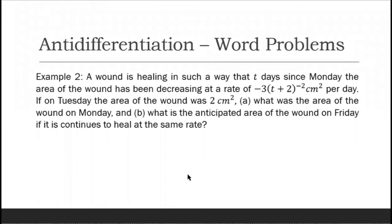Example number two: a wound is healing such that t days since Monday, the area of the wound has been decreasing at a rate of -3(t + 2)⁻² square centimeters per day. On Tuesday the area of the wound was 2 square centimeters. Question a: what was the area of the wound on Monday? Question b: what is the anticipated area of the wound on Friday if it continues to heal at the same rate?